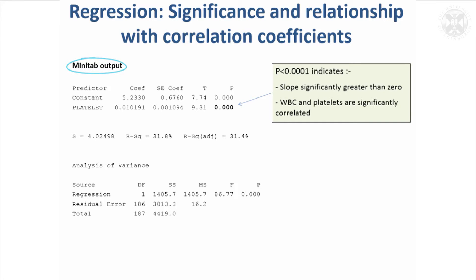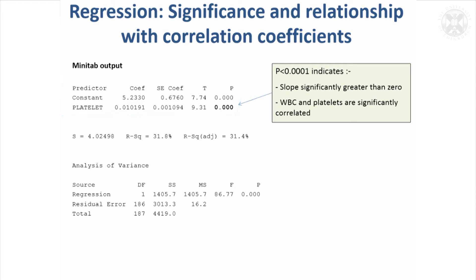Minitab gives you various things, and it takes a little while to work out what it's giving you. In the 'Coef' column — which it doesn't explain properly — we have the constant term, the 'a' term, and we've got the slope for platelets. What we're quite interested in is the p-value, which tests whether the slope is significantly different from zero. It gives us a value of exactly zero, which is effectively less than 0.0001.